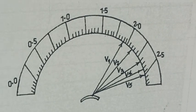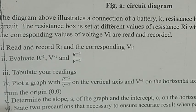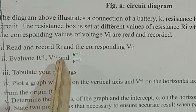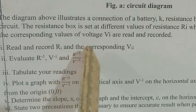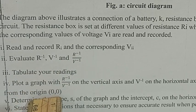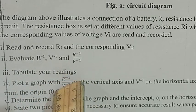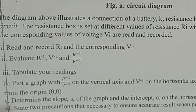We have our readings ready. Remember that from the question we are to evaluate the inverse of R, the inverse of V, and then R^(-1) over V^(-1). Tabulate your readings, and we are asked to plot a graph of R^(-1) over V^(-1) on the vertical axis against V^(-1) on the horizontal axis. Let's now complete our table of values.